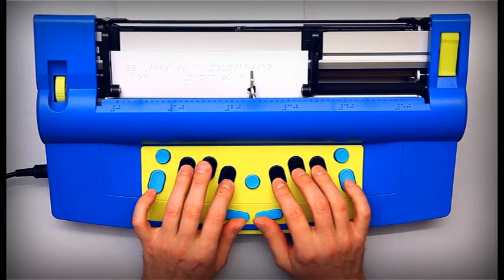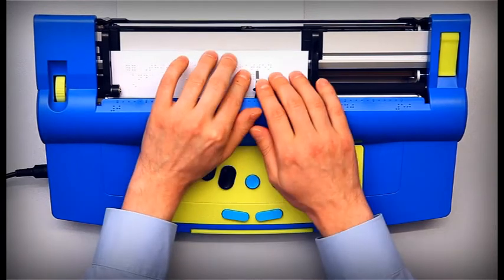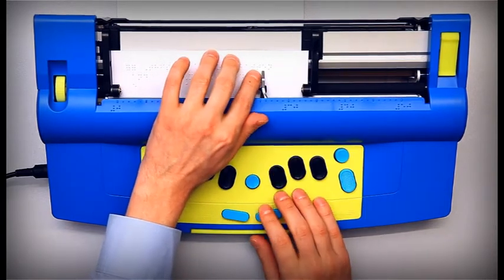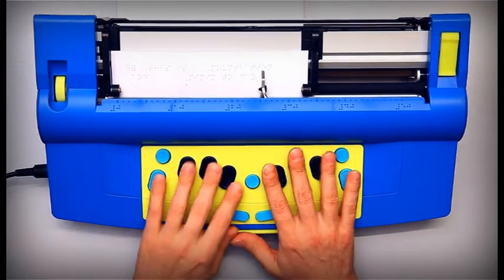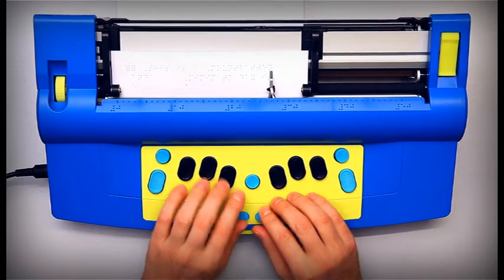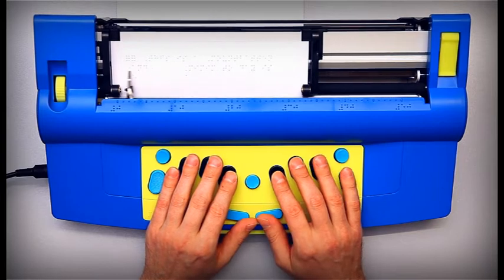In the Mountbatten we have two word wrap states, on and off. By default it is off, which means that if the word you are typing does not fit in the line, the Mountbatten places a hyphen, moves to the next line and keeps brailling.